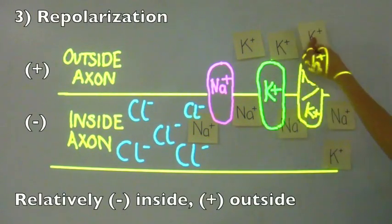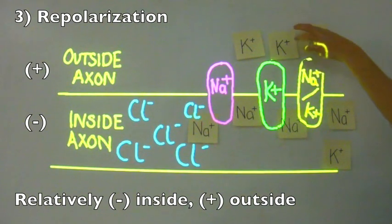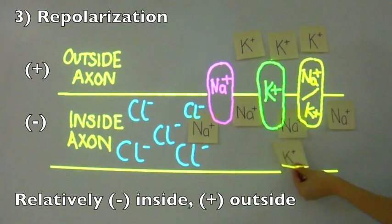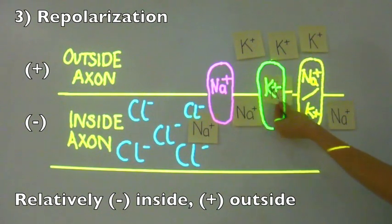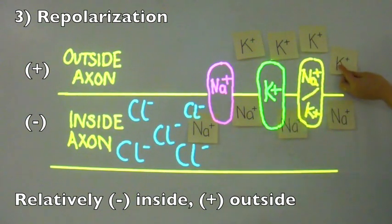This ultimately leads to the inside of the axon becoming relatively negatively charged and the outside becoming relatively positively charged. You can see this as there are more chloride ions and sodium ions on the inside of the axon.